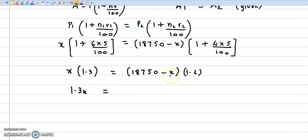Let us open the bracket. 1.2 into 18,750 gives us 22,500. So we have 1.3x equals 22,500 minus 1.2x. Adding 1.2x to both sides, 1.3x plus 1.2x is 2.5x equals 22,500.